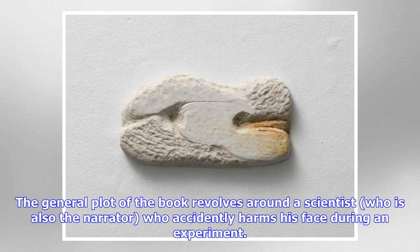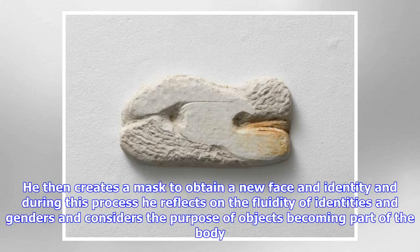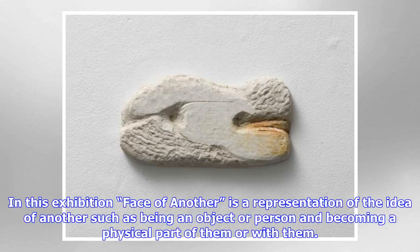The general plot of the book revolves around a scientist, who is also the narrator, who accidentally harms his face during an experiment. He then creates a mask to obtain a new face and identity, and during this process he reflects on the fluidity of identities and genders, and considers the purpose of objects becoming part of the body.